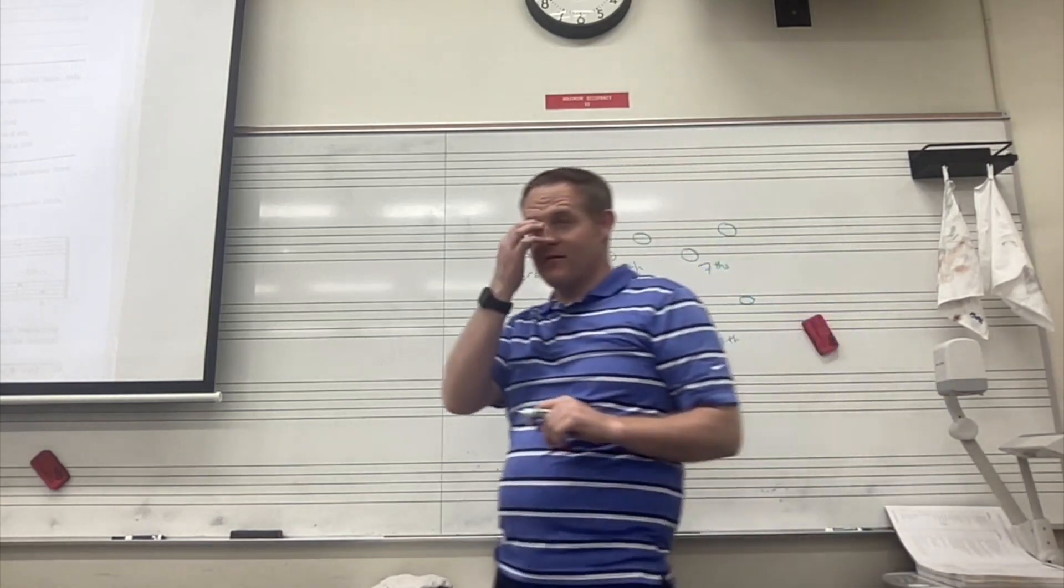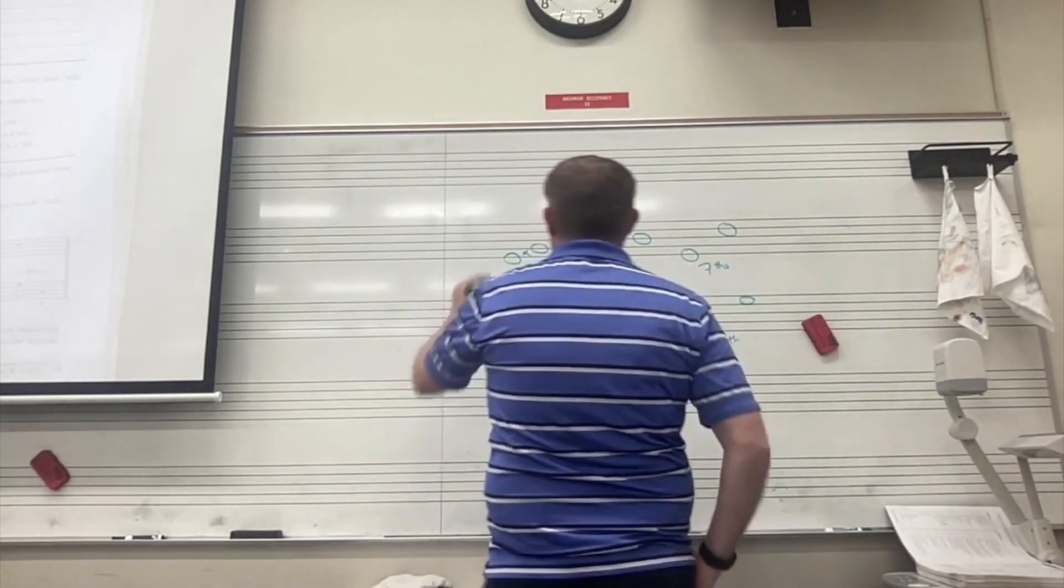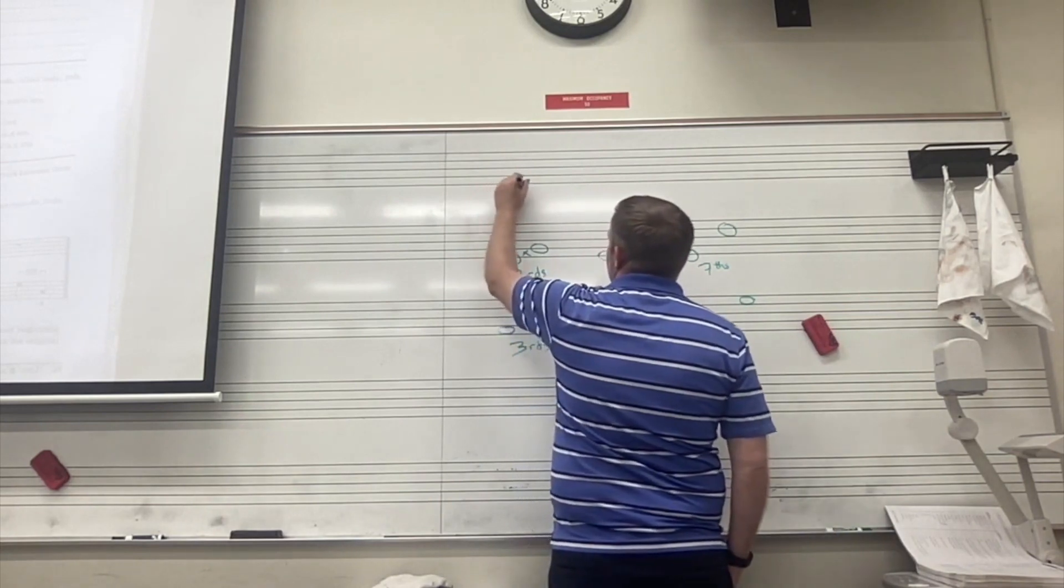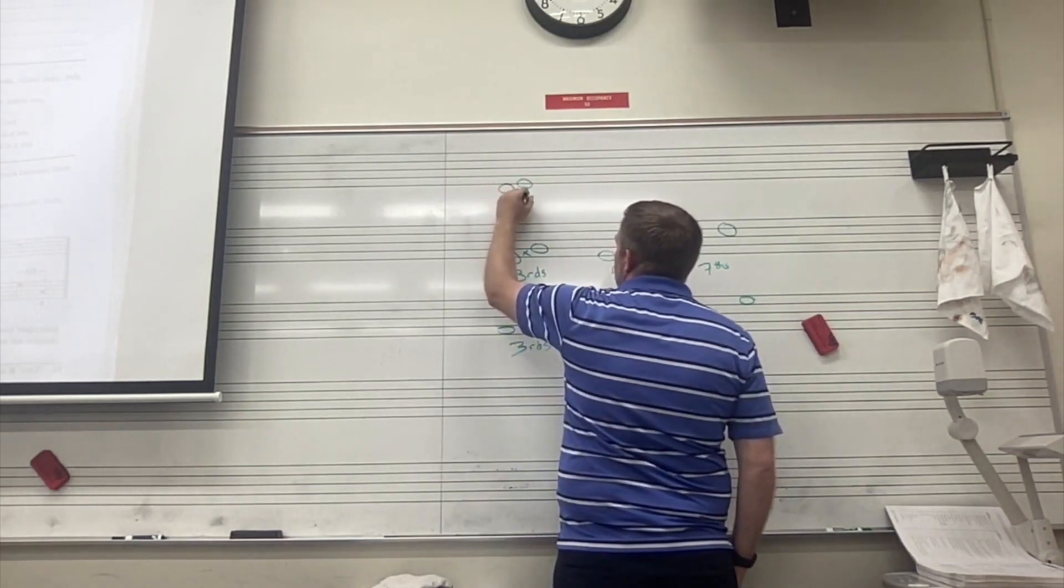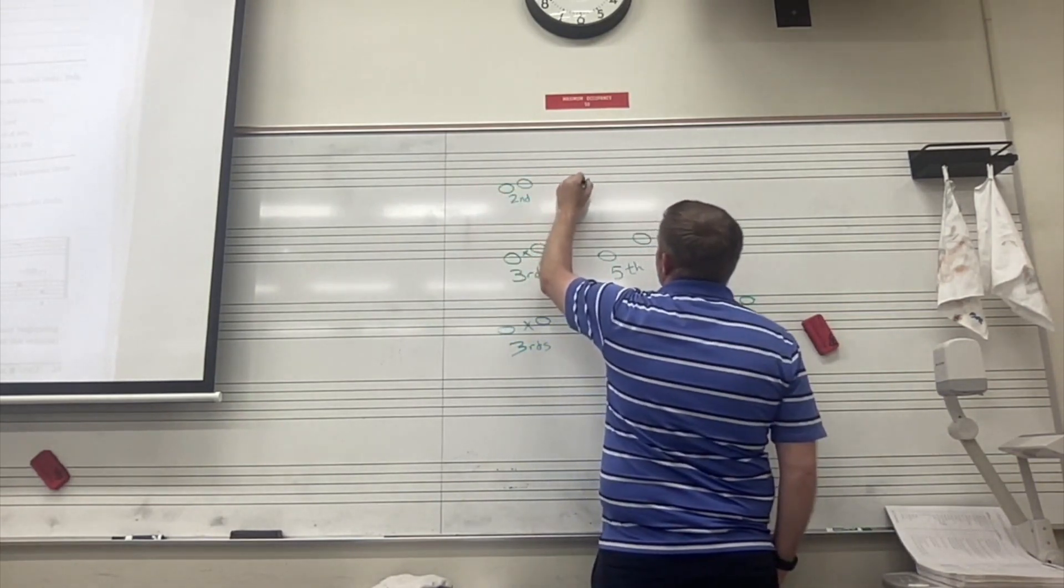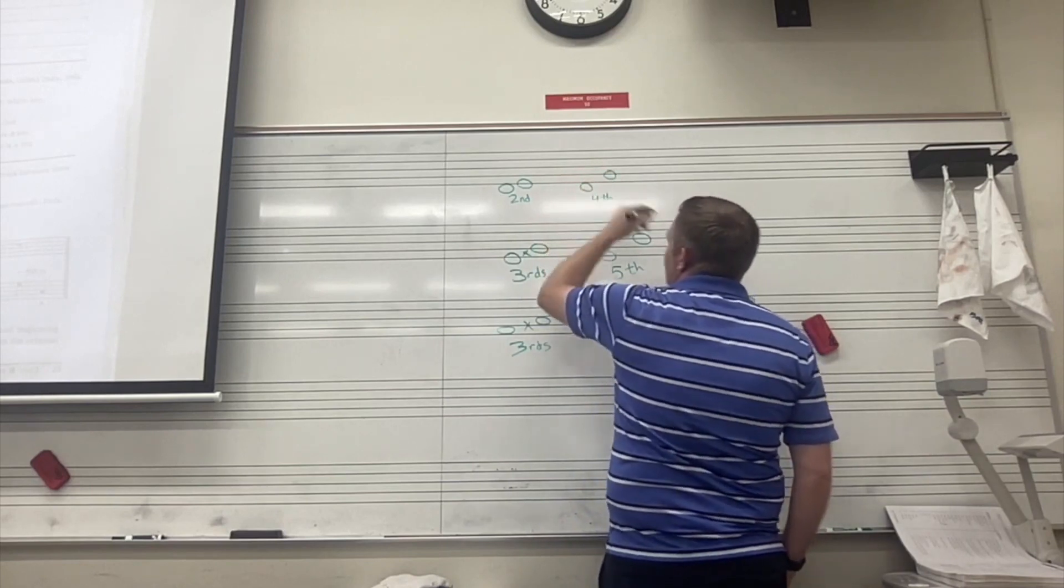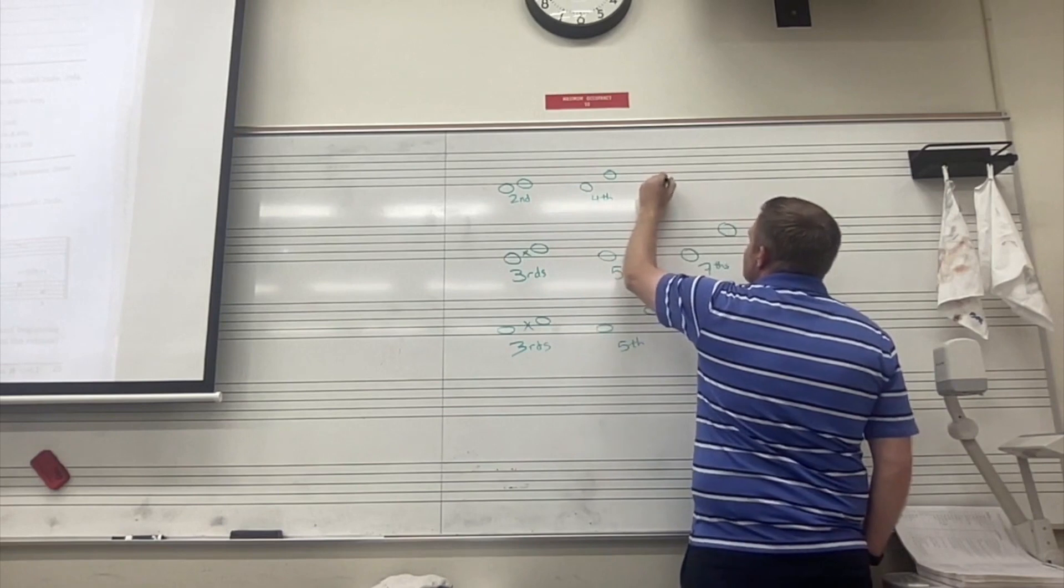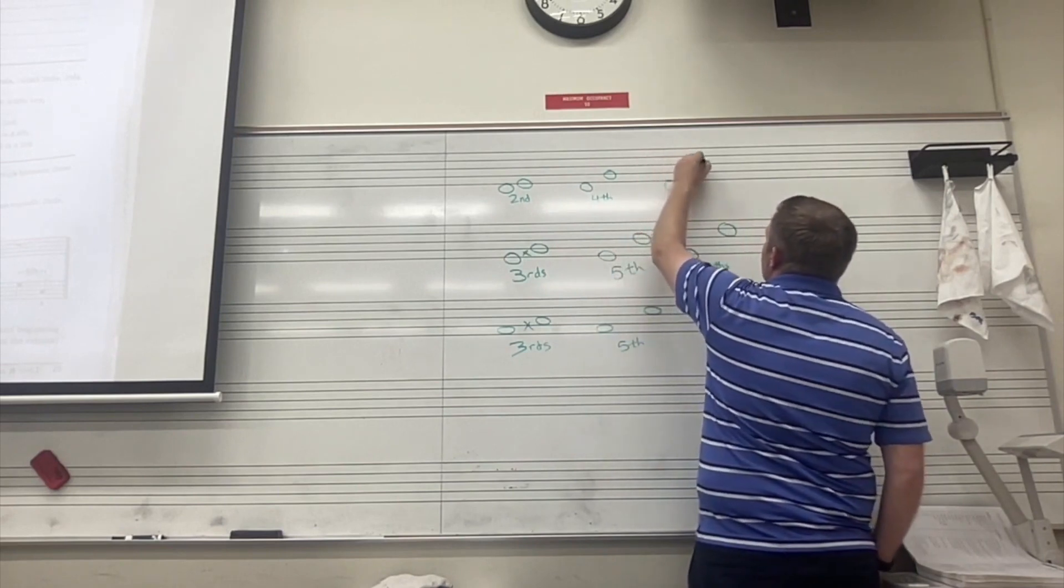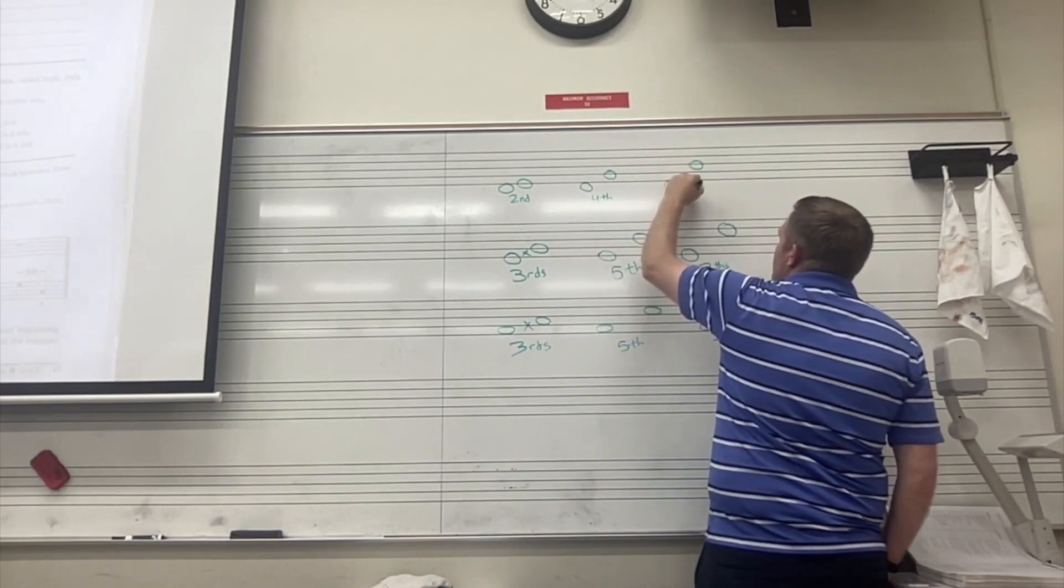Does that make sense? So seconds do not match—you're going to have a line and a space. Fourths do not match because it's even. Sixths do not match. You get one of each.